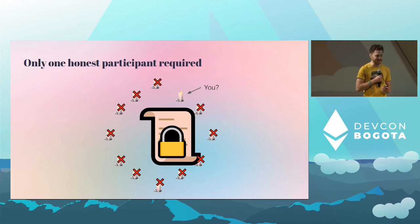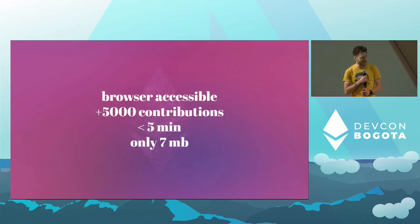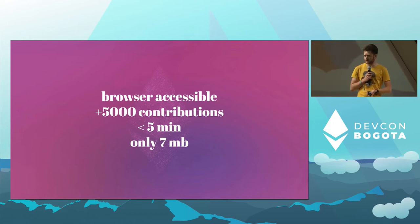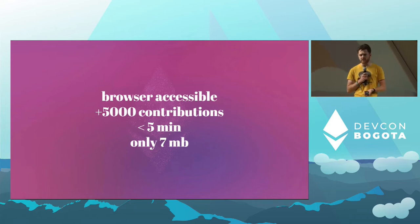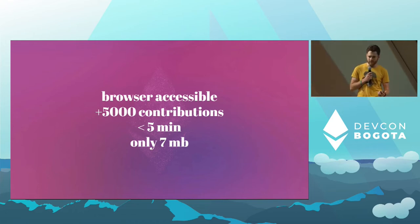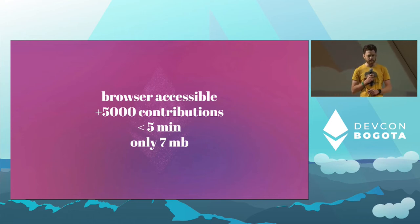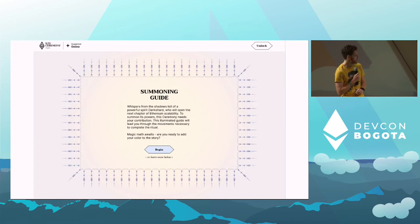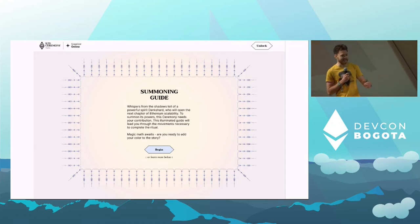To summon the secret, we'll have many interfaces, but the primary one will be browser accessible. The goal is to have somewhere on the order of 5,000 contributions. It will take five minutes of your time — hopefully a trivial thing to do to help improve the security of the network. If you participated, you can be sure yourself that you didn't do any of the weird things to try to compromise the security. The file is very small relative to some other ceremonies we've seen.